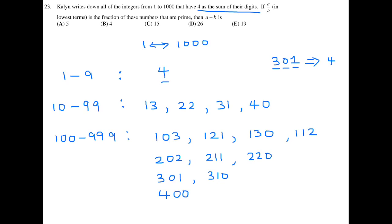One, two, three, four, five, six, seven, eight, nine, ten. I believe that's it. So, how many do we have in total? Well, we have one that was between one and nine, four that are between 10 and 99, and 100 to 999 produced 10. So, we have a total of 15 numbers between one and 1,000 that have four as the sum of their digits.